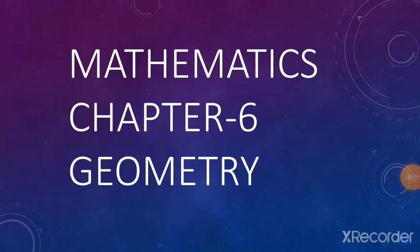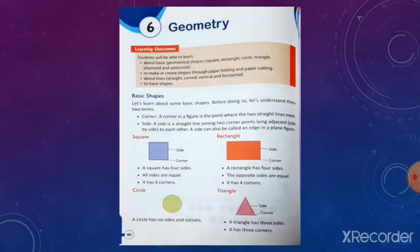Good morning, children. This is our mathematics class. Today we are going to start chapter 6, Geometry. In this chapter, children, we are going to know about the basic geometrical shapes like square, rectangle, circle, triangle, diamond and semicircle. Let's start.